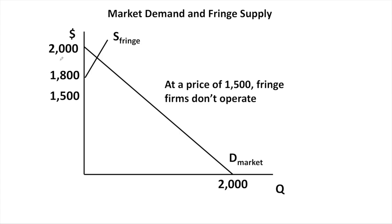After the dominant firm maximizes profits — operating where MR equals MC at a quantity of 500 units and a price of 1,500 — we can look at what happens with the fringe firms. At a price of 1,500, the fringe firms don't want to operate. The cost of the fringe firms trying to supply the good actually exceeds $1,500, so they don't produce any units.